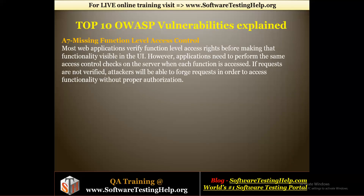Now talking about the seventh vulnerability: missing functional level access control. Most applications verify function-level access rights before making that functionality visible in the UI. However, applications need to perform the same access control check on the server when each function is accessed. If requests are not verified, attackers will be able to forge requests in order to access functionality without proper authorization.